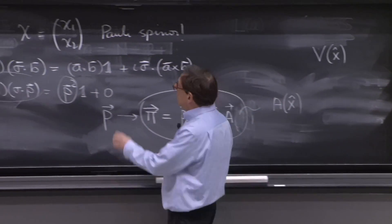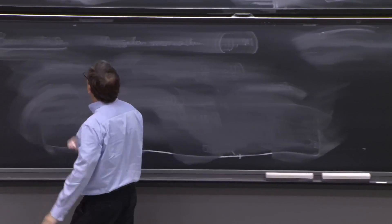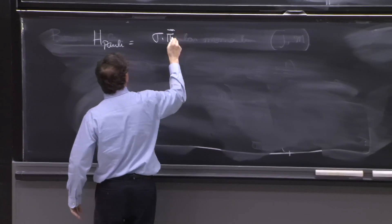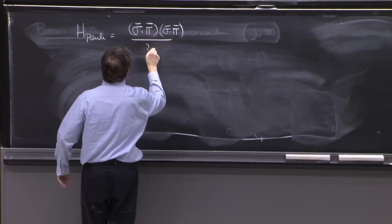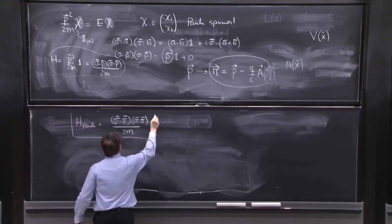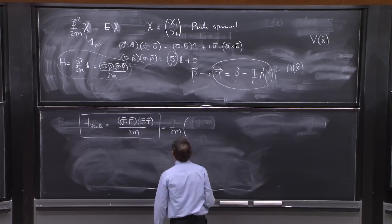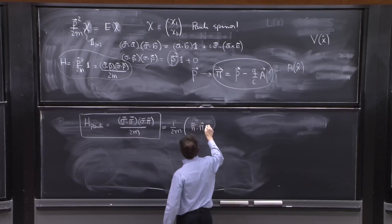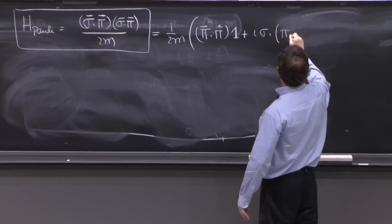So the Pauli Hamiltonian, H Pauli, H Pauli is nothing else than sigma dot pi times sigma dot pi over 2m because we said p must be replaced by pi. So this is the Pauli Hamiltonian. And it's equal to 1 over 2m pi squared, pi dot pi times 1 plus i sigma dotted with pi cross pi.